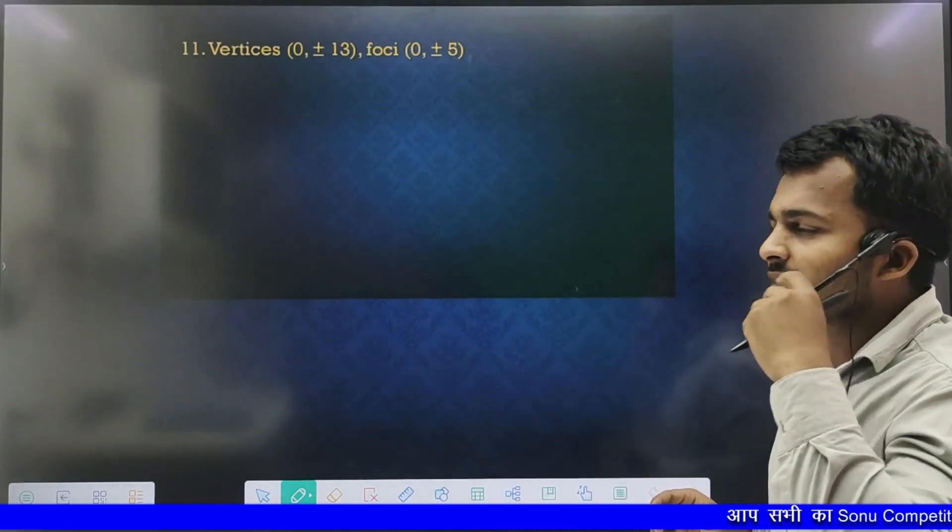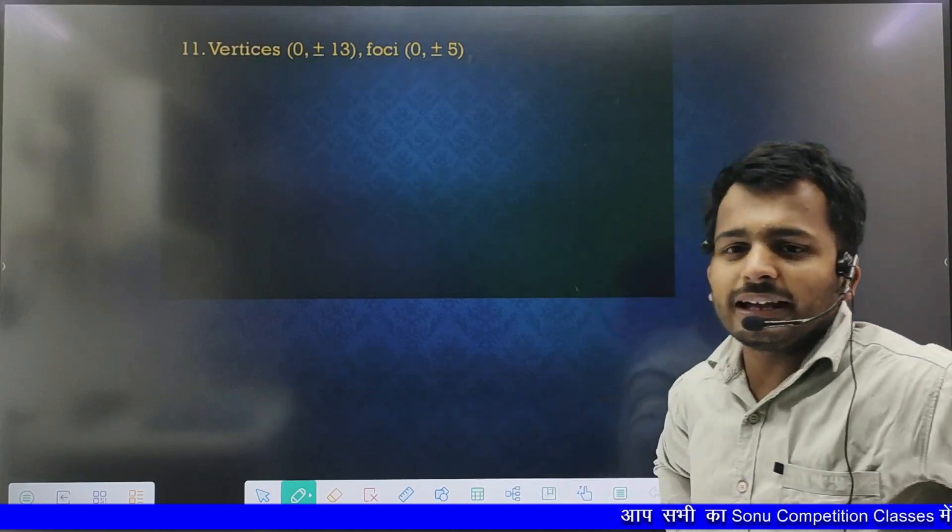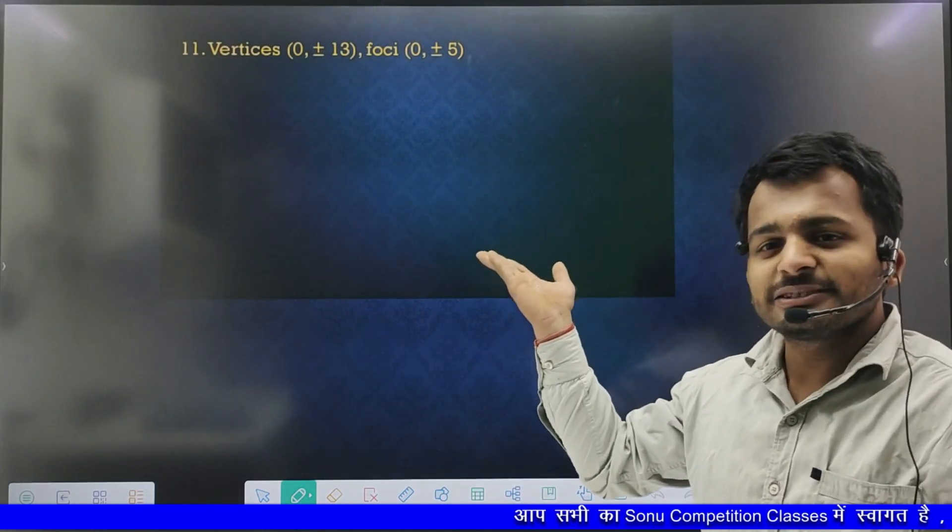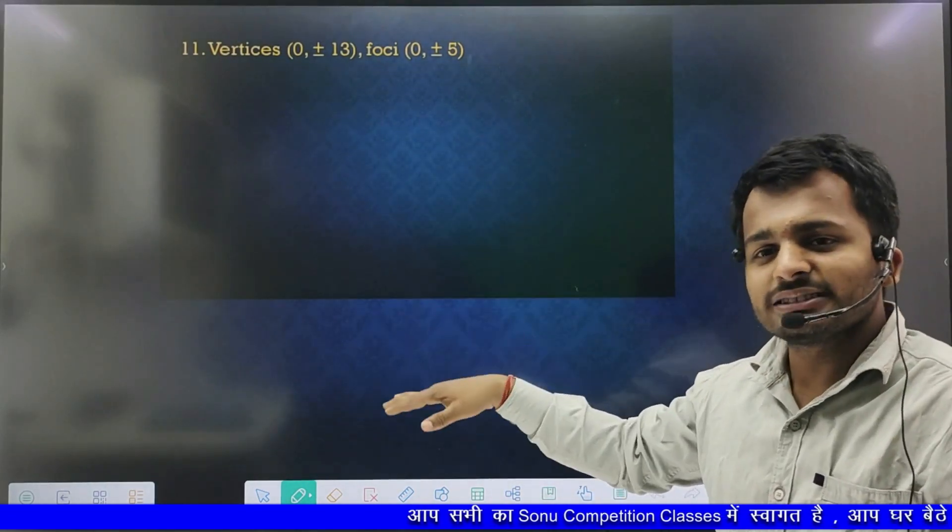Here you will see that these are vertices. So why are the vertices doing this? They are on the y-axis, so who is the major axis?